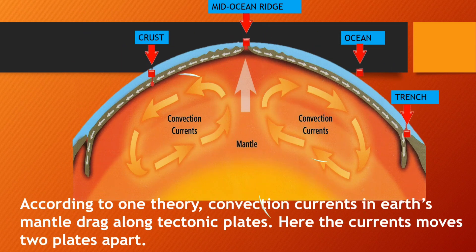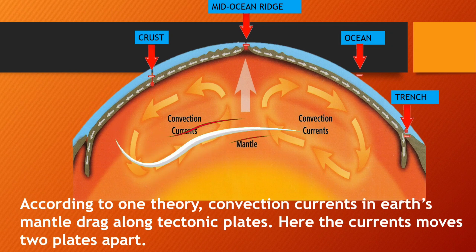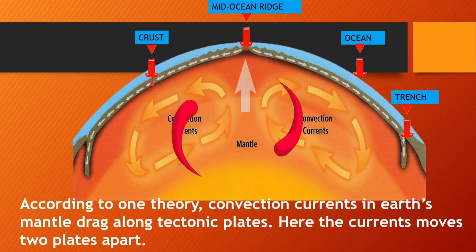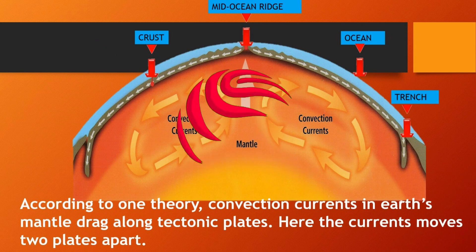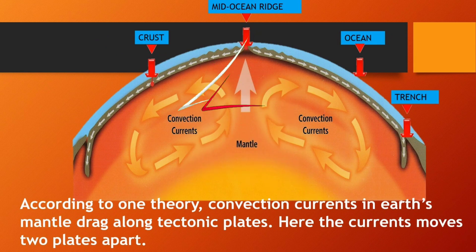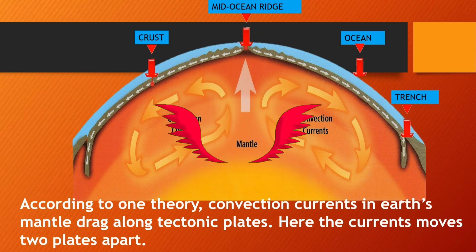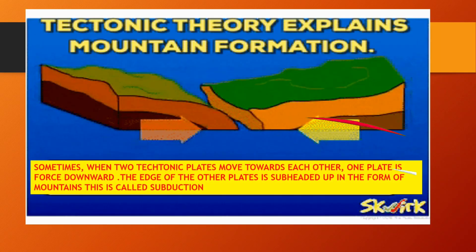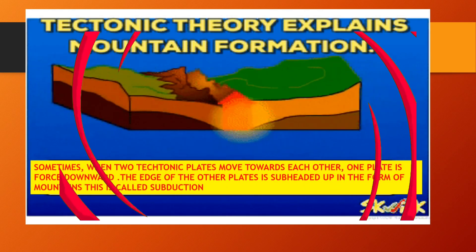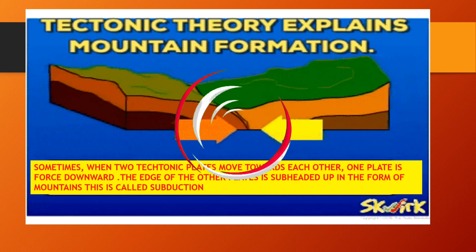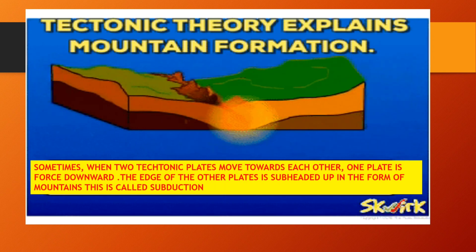According to one theory, convection currents in Earth's mantle drag along the tectonic plates. Here, the current moves two plates apart as seen in the figure. Sometimes, when two tectonic plates move towards each other, one plate is forced downward.